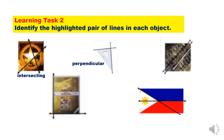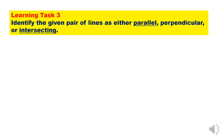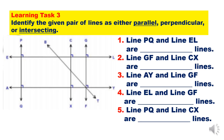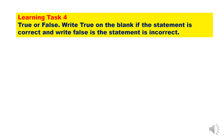Learning Task 3 — identify the given pair of lines as either parallel, perpendicular, or intersecting. Number 1 — line PQ and line EL are perpendicular lines. Number 2 — line GF and line CX are parallel lines. Continue answering numbers 3 and 4. Learning Task 4 — true or false. Write true on the blank if the statement is correct, and write false if the statement is incorrect.